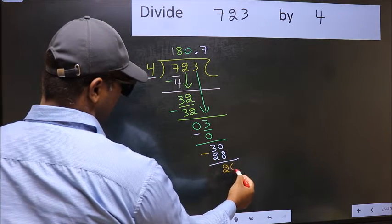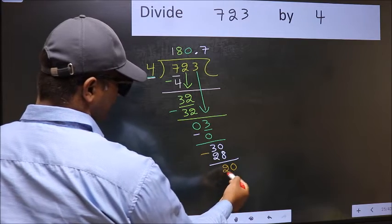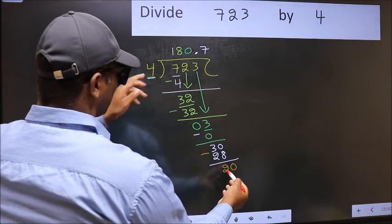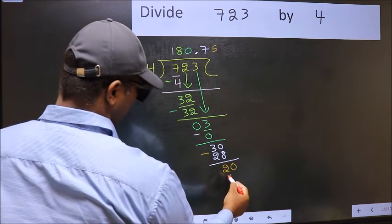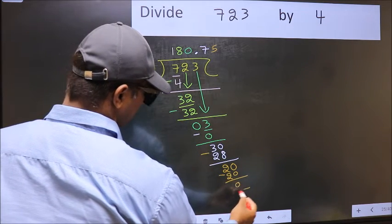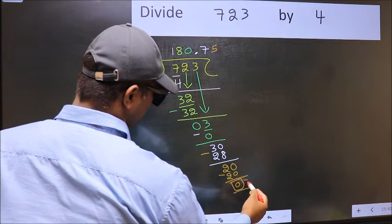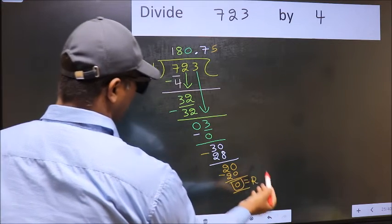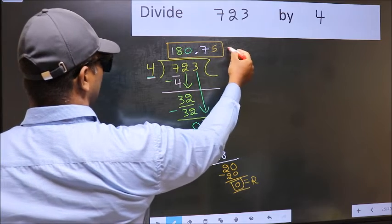We already have decimal. So directly take 0. When do we get 20 in 4 table? 4 fives, 20. Now you subtract. You get 0. This is your remainder. And this is our quotient.